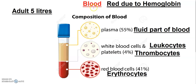Blood is a circulatory fluid and it looks red in color due to the presence of hemoglobin. Hemoglobin is a pigment present in blood that gives it the red color. If we talk about blood vessels, we have different types: arteries, veins, and capillaries. The red color of blood is due to the presence of hemoglobin, which is a protein.